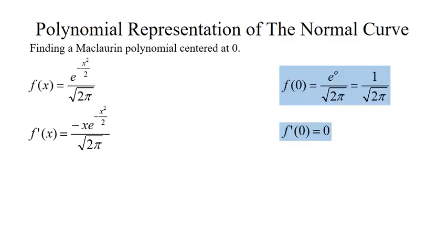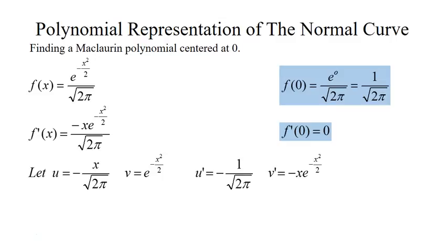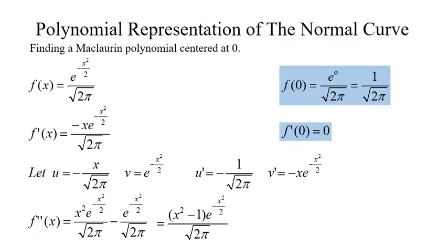To find our second derivative we're going to use the product rule. I'm going to break it up as u equaling negative x over the square root of 2 pi, and v is e to the negative x squared over 2. We'll find the derivatives of u and v, then plug into the product rule u v prime plus v u prime. There are common factors — e to the negative x squared over 2 and the square root of 2 pi in the denominator — so factoring those out we're left with x squared minus 1.